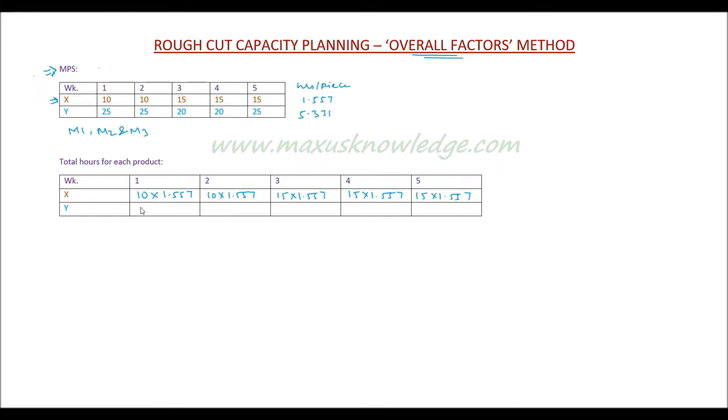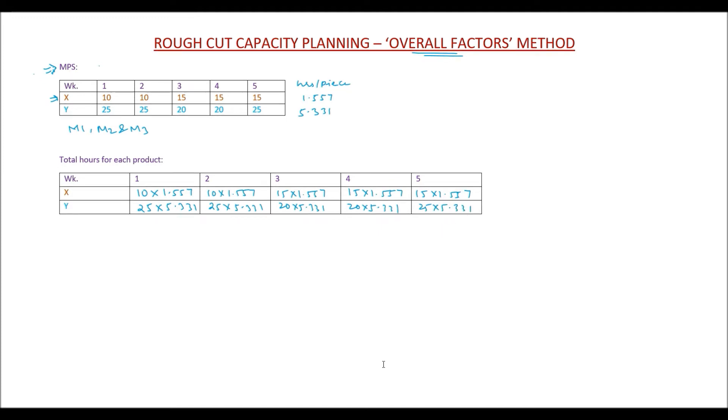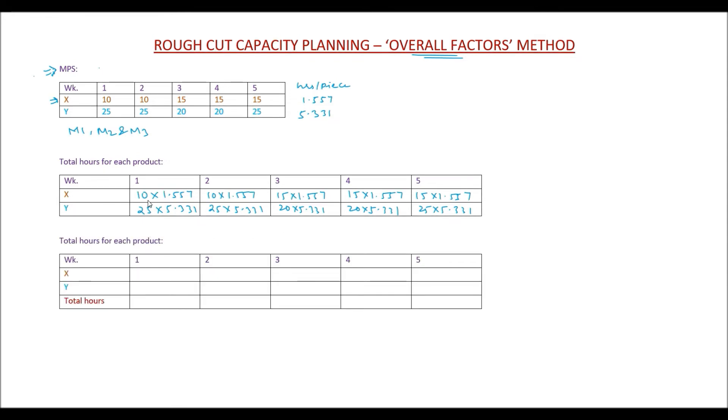For Y, each unit requires 5.331 hours. In week 1 we have to produce 25 units, so the hours required is 25 multiplied by 5.331. For week 2, 25 multiplied by 5.331. In week 3, 20 multiplied by 5.331. In week 4, 20 multiplied by 5.331. In week 5, 25 multiplied by 5.331. So let's now calculate these numbers.